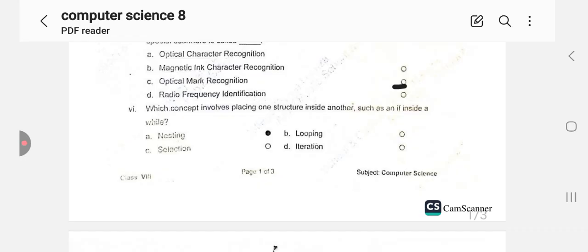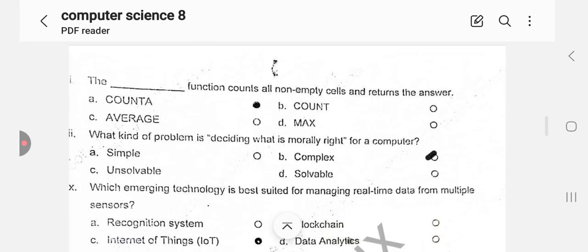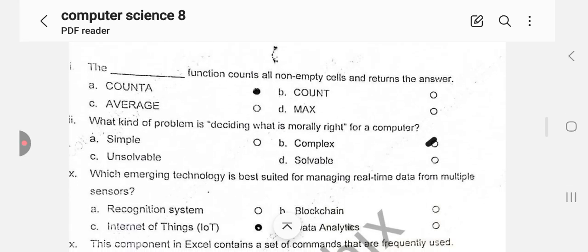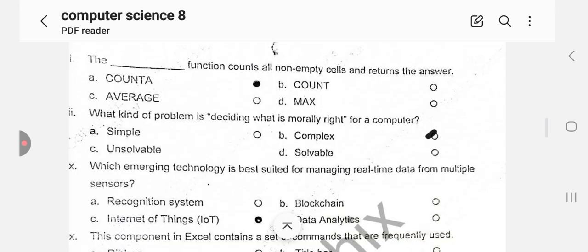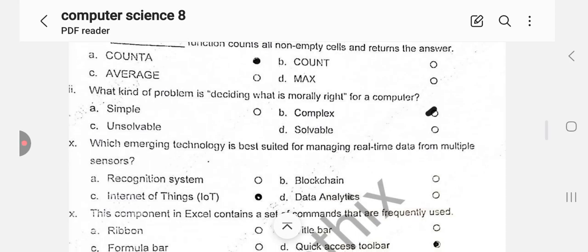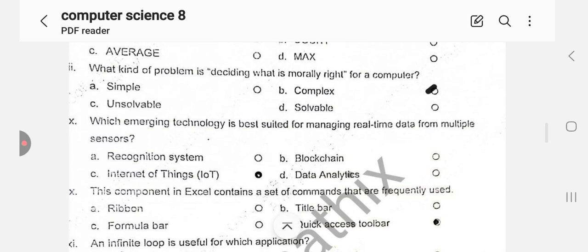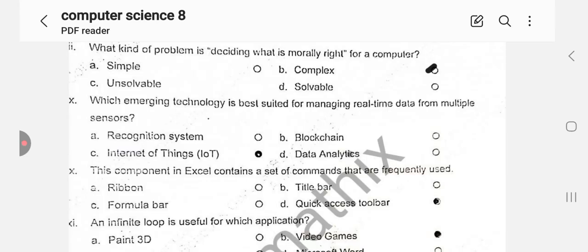Which concept involves placing one structure inside another such as an if inside a while? That's nesting, option A is correct. The dash function counts all non-empty cells and returns the answer, count function, option is correct. What kind of problem is deciding what is morally right for a computer? It's a complex problem for the computer.